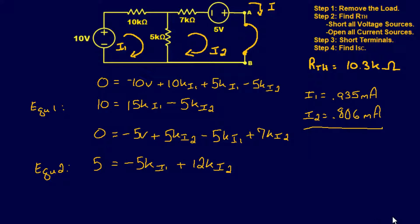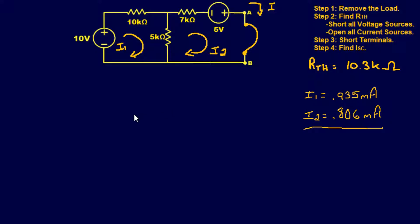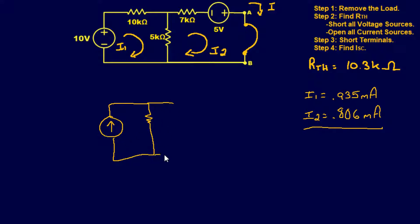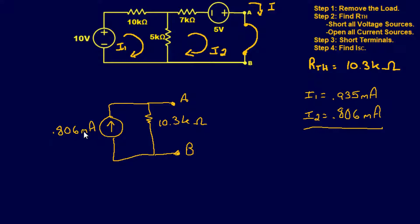We can now plot the Norton equivalent circuit: a current source in parallel with a resistance between points A and B. The Norton resistance is 10.3k ohms and the Norton current is 0.806 milliamps. That is our final Norton equivalent circuit.